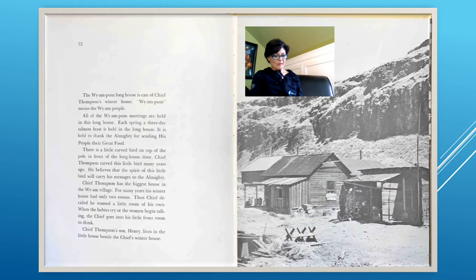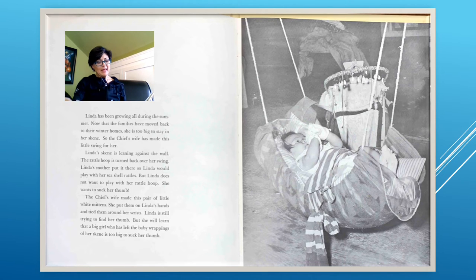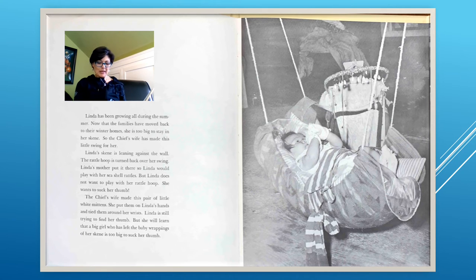Chief Thompson has the biggest house in the Wyampum Village. There is a little carved bird on top of the pole in front of the Longhouse door — Chief Thompson carved it many years ago and believes the spirit of the bird will carry his messages to the Almighty. For many years his winter house had only two rooms, then the chief added a little front room of his own to think in when the babies cry or the women begin talking. Linda has been growing all during the summer. Now that the families have moved back to their winter homes, she is too big for her skein, so the chief's wife made her a little swing. Linda doesn't want to play with her rattle hoop — she wants to suck her thumb.